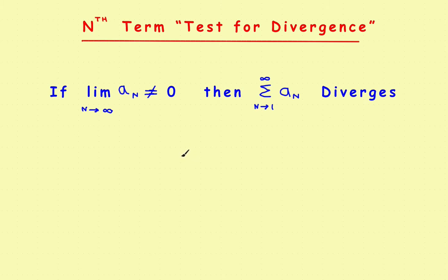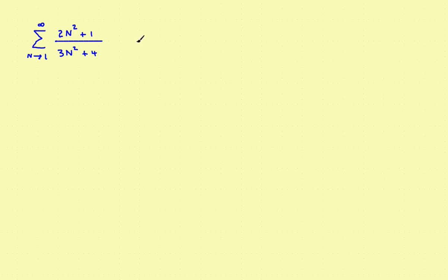In this video we're going to look at the nth term test for divergence, and this is the rule right here. We'll come back to this in just a second, but before we start on the rule, let's take a quick look at a sample problem to show where you would use this. You'll be given a series and asked: does the series converge or diverge? Later on you'll get several tests for convergence, but in a lot of problems it's actually quicker to test for divergence, because if you can show quickly that the series diverges, you don't even need to run any of the convergence tests.